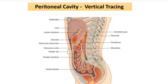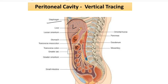In this video we are going to learn about the vertical tracing of the peritoneal cavity. You can see this picture — this is a sagittal or mid-sagittal section. Above we have the diaphragm, below that we have the liver and a small portion of the stomach, the transverse colon, and behind we have the duodenum and pancreas, and all these are the coils of the small intestine.